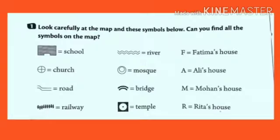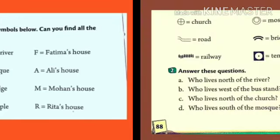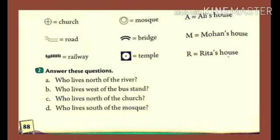Now follow the directions and try to find all the symbols on the map. The meaning of these symbols is given, and that will help you identify what they are. If you find these symbols on the map, you have to answer the questions — for example, who lives north of the river?